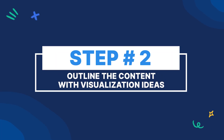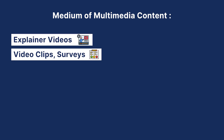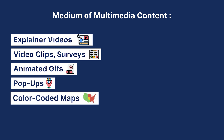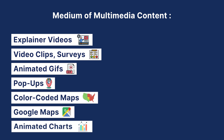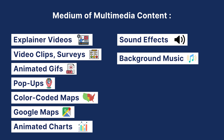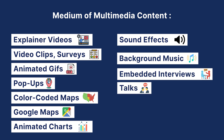Step two: outline the content with visualization ideas. Once you have your content figured out, it's time to start considering the different mediums you can use for that content. This is what will make a multimedia presentation. There are tons of mediums available like explainer videos, video clips, surveys, animated GIFs, pop-ups, color-coded maps, Google Maps, animated charts, sound effects, background music, embedded interviews and talks, and more.